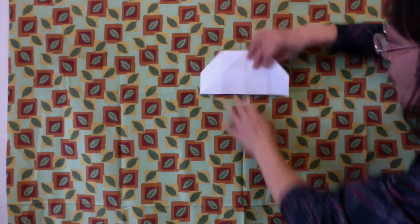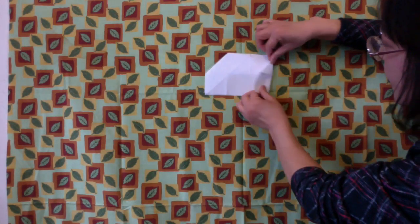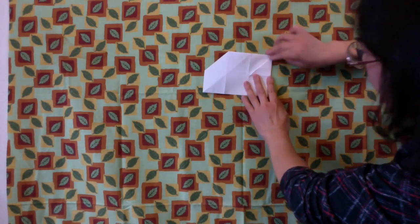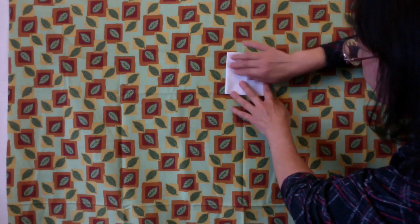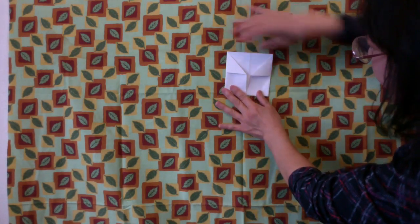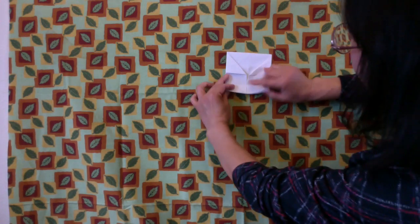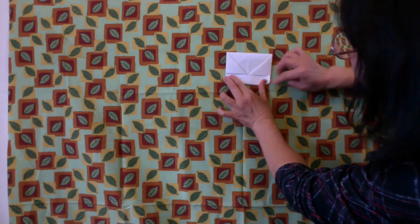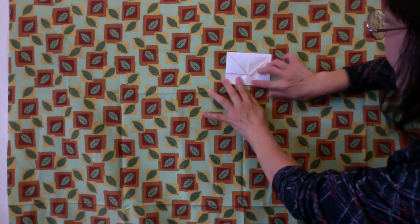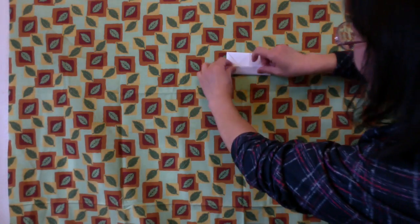Now we are going to turn the whole thing over. Fold the right edge to the center. Left edge to the center. Repeat the same thing. Bring the bottom up to the bottom of the roof shape. And then fold it again.